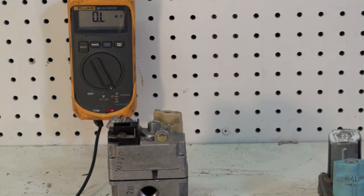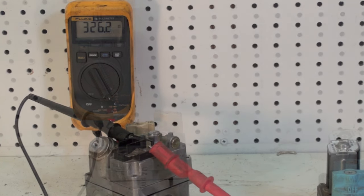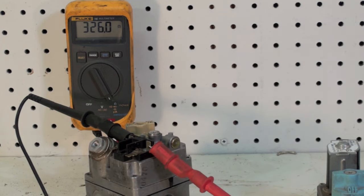With one of these old valves, this is an old pilot valve, I put it on the ohmmeter and I got 325 or 326 ohms.